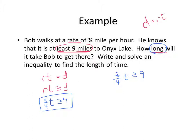We multiply each side by 4 thirds — that cancels, leaving you with just a T. Since we did not multiply by a negative, it stays greater than or equal to. The 3s simplify and we get greater than or equal to 12. Since it's time, it is going to take him at least 12 hours to walk to the lake.